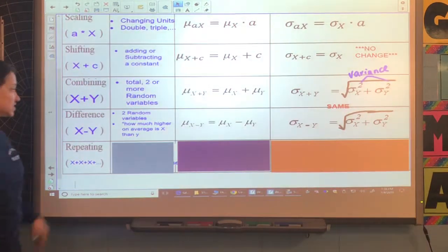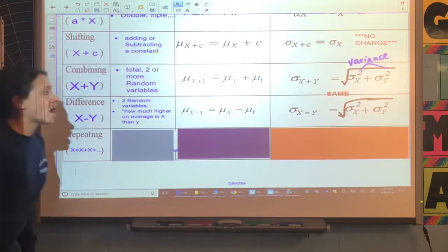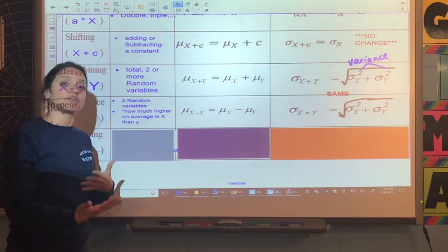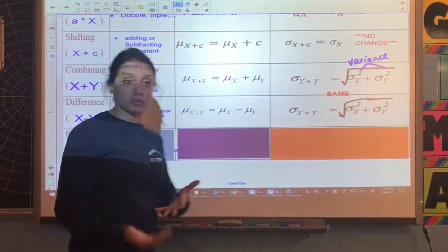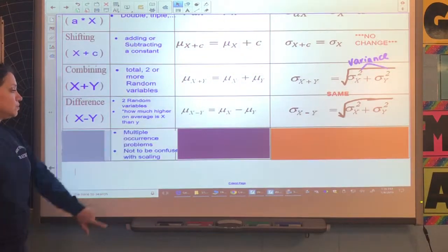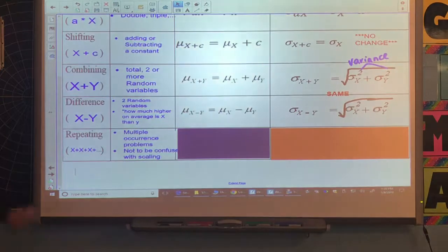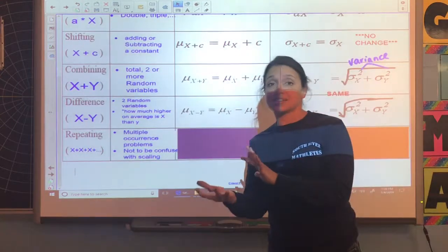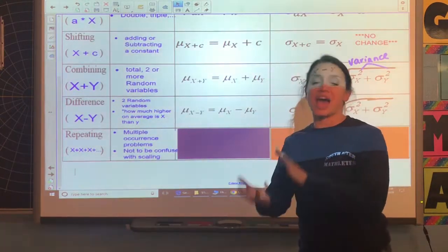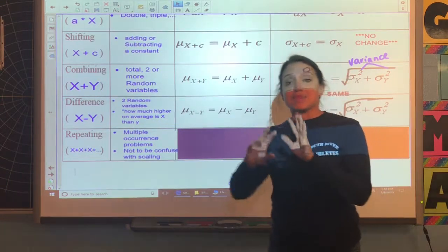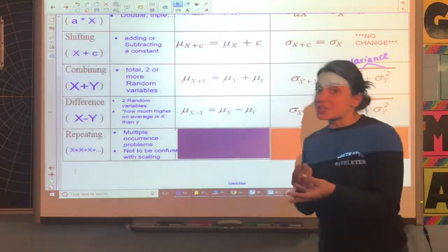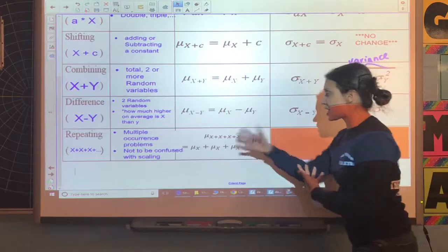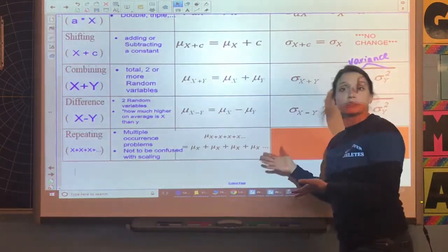The last one is when you're repeating, maybe repeating event X over and over again, like repeating flipping a coin multiple times as separate events. Multiple occurrence problems, this is not the same as scaling. We looked at this in the last video. 2X, X being a random variable, is not the same as X plus X. The means will end up being the same, but there will be an adjustment in the variances. The mean is going to be the mean of X plus the mean of X plus the mean of X, however many times you are adding it together.